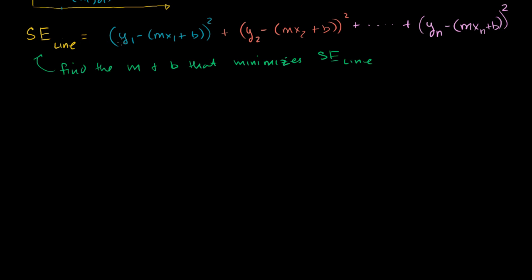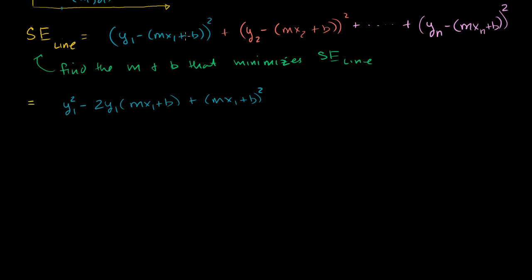Let me just rewrite this expression. This whole video is just going to be rewriting this over and over again, simplifying it a bit with algebra. So this first term, y1 minus mx1 plus b, squared, is going to be — and we could write this as the squared error of the line — if we just expand it: y1 squared minus 2 times y1 times (mx1 plus b), plus (mx1 plus b) squared. All I did is square this binomial. You can imagine if this was a minus b, it would be a squared minus 2ab plus b squared.